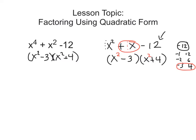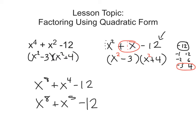The only time that this quadratic form works is if the exponent on your first term is twice as large as the exponent in your middle term. So 4 is twice as big as 2, so this will work. If I had x to the 8th plus x to the 4th minus 12, this would also work. But if I had x to the 8th plus x to the 5th minus 12, this will not work, because 8 is not twice as big as 5. So the first exponent has to be double the middle exponent.